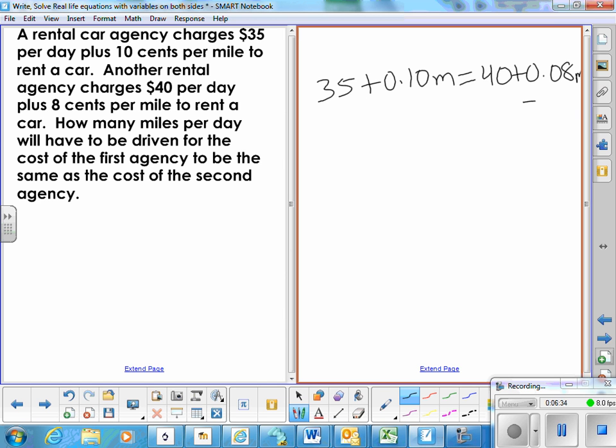Let's subtract $0.08 per mile from each side. That way we can have a positive number to deal with. So we have 35 plus $0.05 plus $0.02 per mile is equal to $0.40. So let's get the $0.02 per mile.